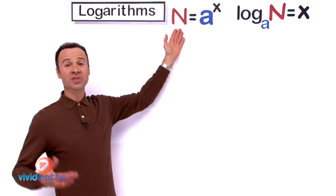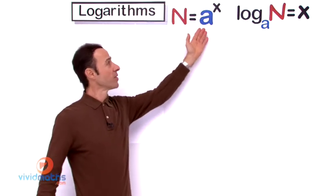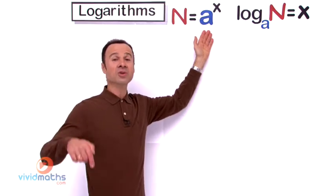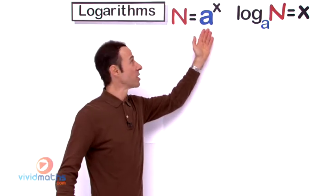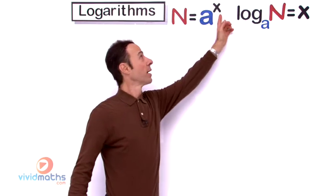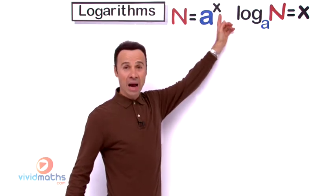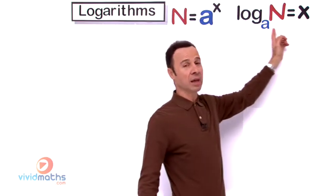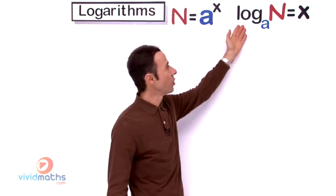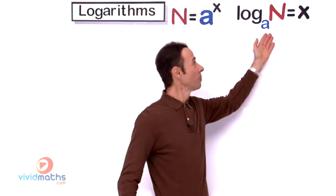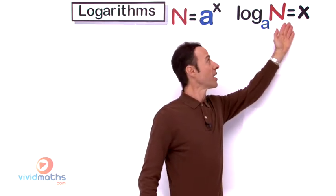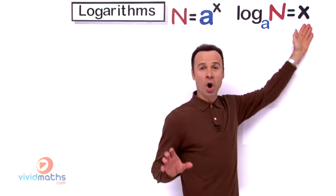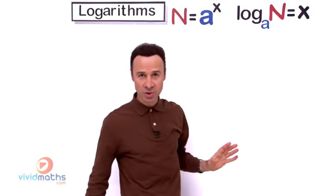We have n, which is the number we will be working with. The a refers to the base, and the base is always below — because it is in the basement, down the bottom — below the x, which is the power up top. That is equivalent to the logarithmic statement: log base a, then n the number, equals x the power. The best way to get concrete understanding is to do some examples.